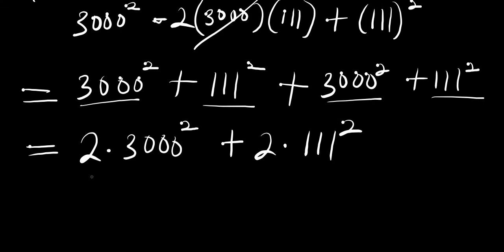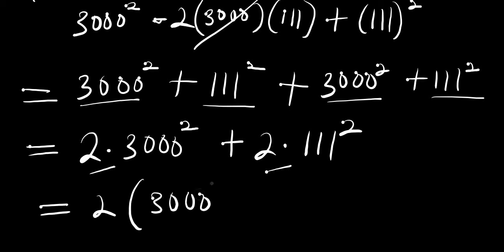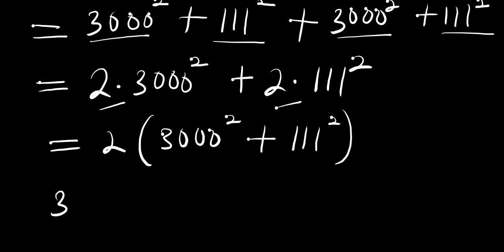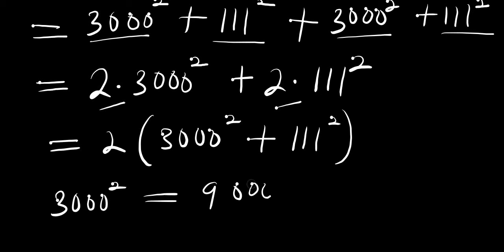At this point we can factor out the 2, giving us 2 into 3000 power 2 plus 111 power 2. Now, 3000 power 2 simply equals 9 million.